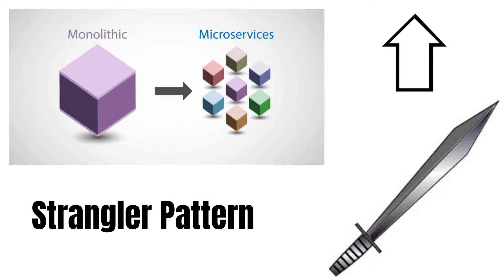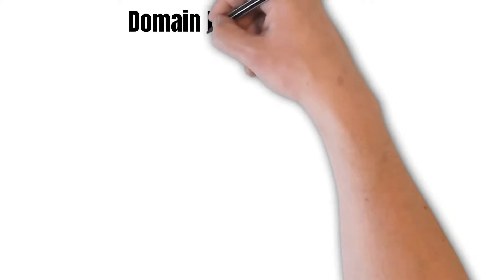Another logical point here is: from where to draw the sword — how to cut the functionalities of a monolithic application into separate functionalities so that we can create separate microservices for them. And not just monolithic to microservice migration, but if we are developing a greenfield project also, we need a set of rules to decide how to bifurcate functionalities into different services.